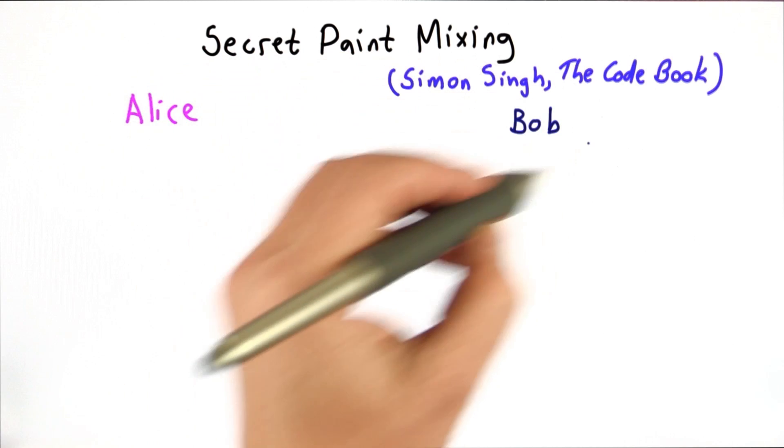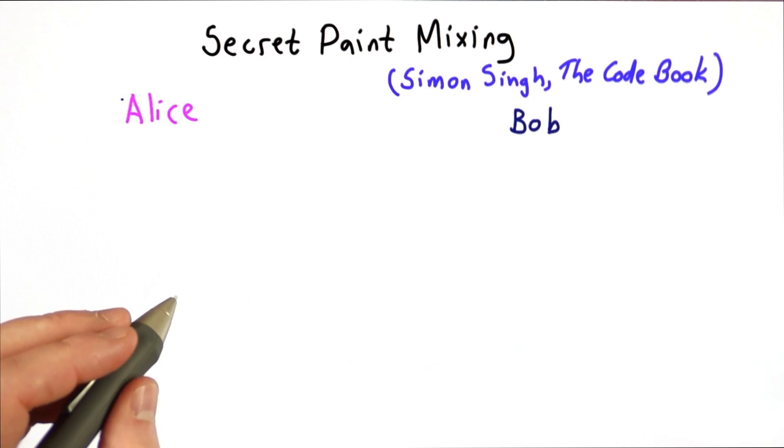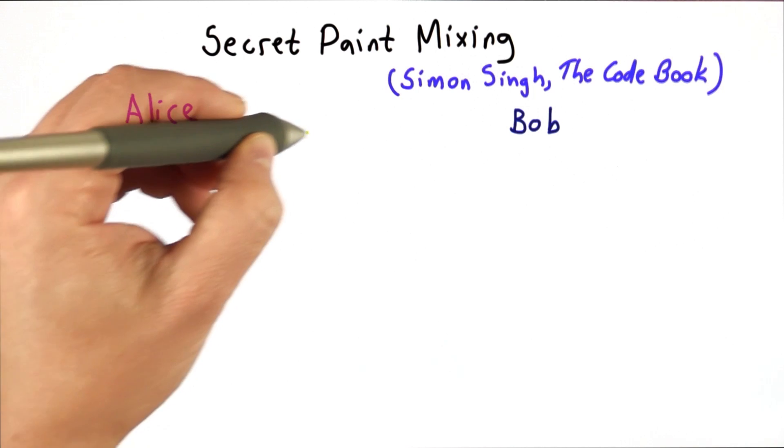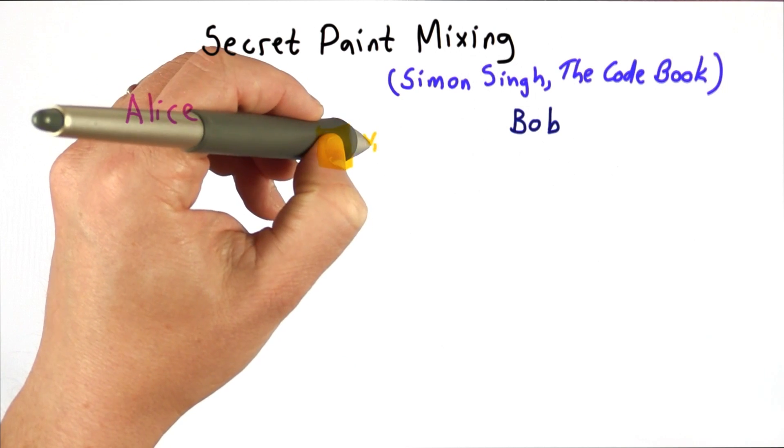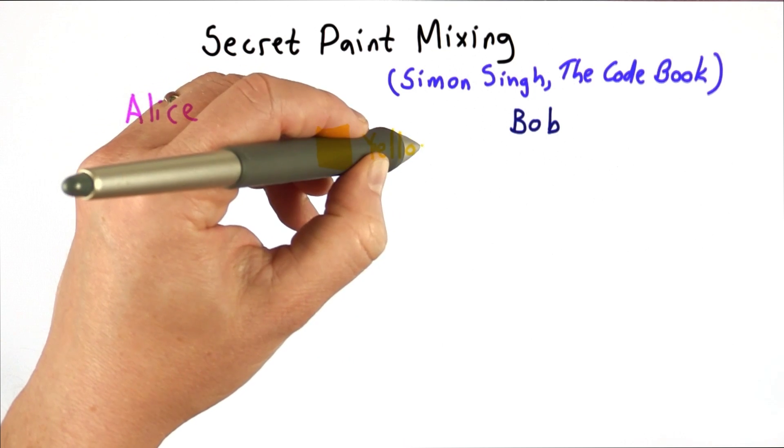So we have our usual suspects, Alice and Bob, that want to establish a shared key. They're going to do this by first picking a public color. Let's say they both like yellow, and they'll start with cans of identical yellow paint.